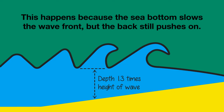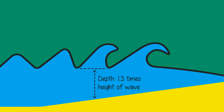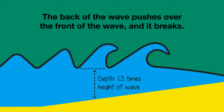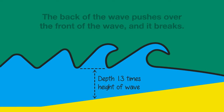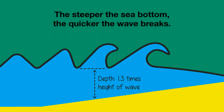This happens because the bottom of the sea really slows down the front of the waves, but the back of the waves still pushes on and on. And finally the back of the wave pushes over the front of the wave, the wave breaks and rolls. Now we have surf.